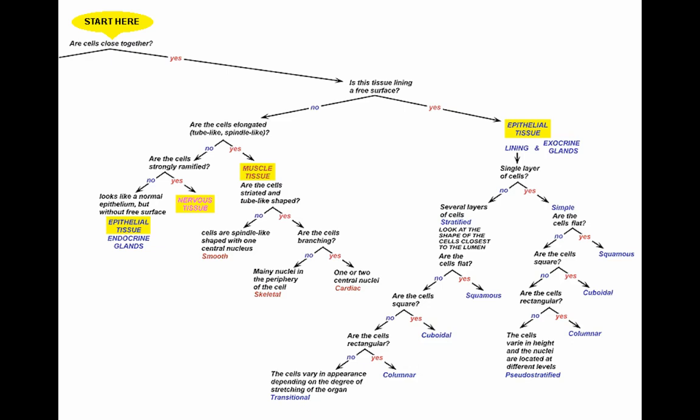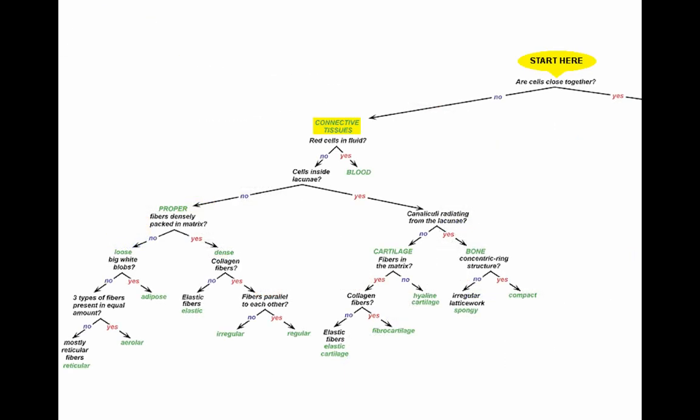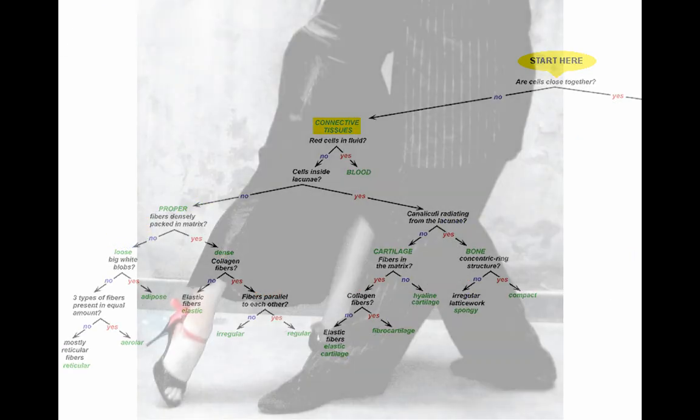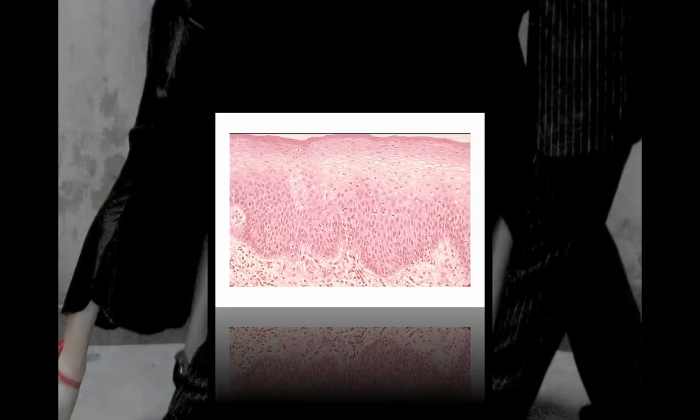So we're going to use this dichotomous key. There are a lot of them out there, but I like some that are like this because it starts with one very fundamental question: Are the cells close together? Are they tightly packed? If yes, we're going to use this side of the key. If no, we're going to use the other side. So let's tango and see how this works.